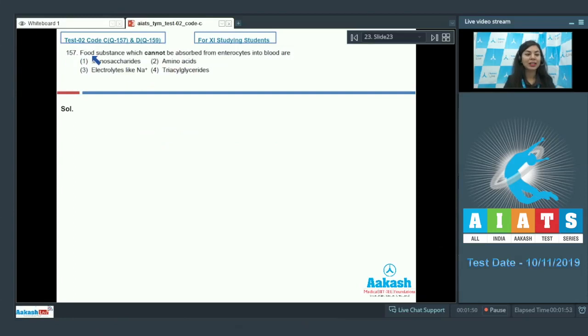Question 157: Food substances which cannot be absorbed from enterocytes into blood are monosaccharides, amino acids, electrolytes like sodium ions, or triacylglycerides? Fatty acids and glycerol are insoluble substances, so they are not directly absorbed into the blood.